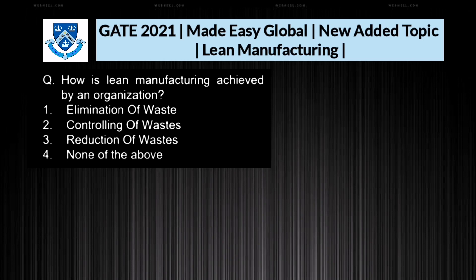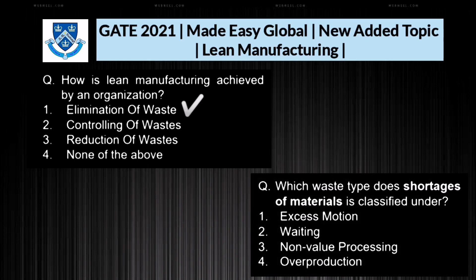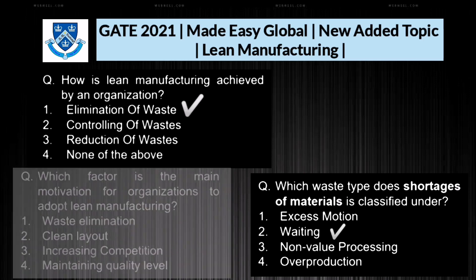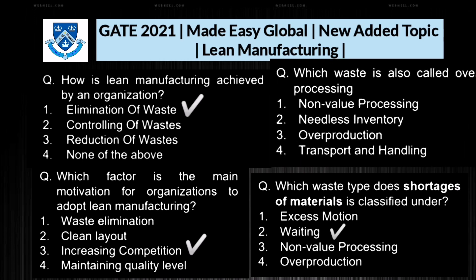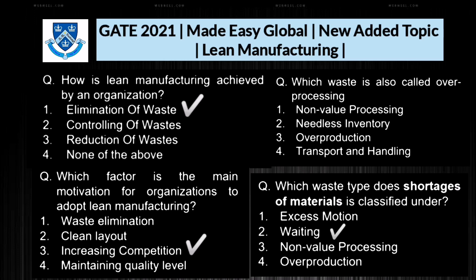Here are some practice questions. First: how is lean manufacturing achieved? Answer: elimination of waste. Second: which waste type is shortage of materials classified under? Answer: waiting. Third: what is the main motivation for an organization to adopt lean manufacturing? Answer: increasing competition. Fourth: which waste is also called over-processing? Answer: non-value processing. These questions are easy but sometimes confusing in the exam.